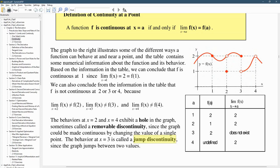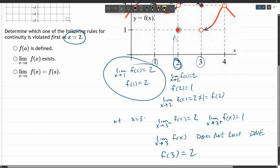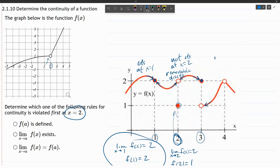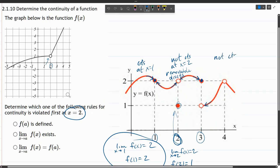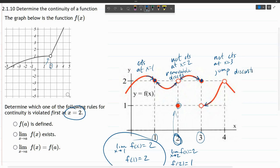This discontinuity, when the limit does not exist because they disagree, that's what we call a jump discontinuity. I'll probably spell it wrong, but let's label it. So we say not continuous at x equals three, and we call this a jump discontinuity.